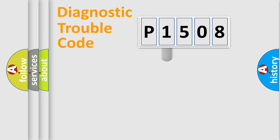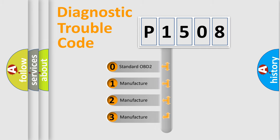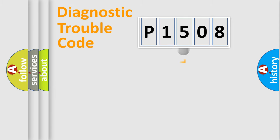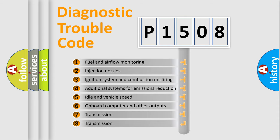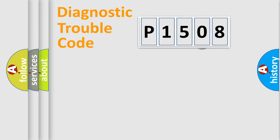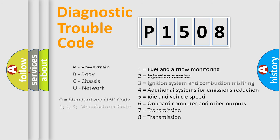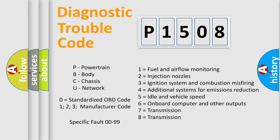This distribution is defined in the first character of the code. If the second character is expressed as zero, it is a standardized error. In the case of numbers 1, 2, or 3, it is a more specific expression of a car-specific error. The third character specifies a subset of errors. The distribution shown is valid only for the standardized DTC code. Only the last two characters define the specific fault of the group. Note that such a division is valid only if the second character code is expressed by the number zero.